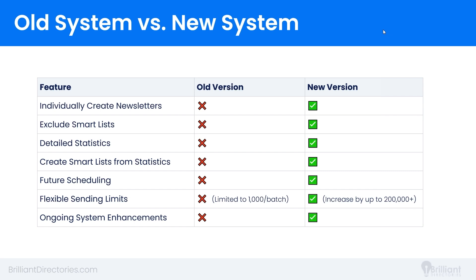Also, excluding smart lists. With the old newsletter system, you could include smart lists to send newsletters to. Now you can also choose to exclude smart lists when sending. For example, you can send a newsletter to all your members but exclude inactive members, or exclude members in a specific location, or exclude members who joined on a particular date. This gives you more flexibility in terms of your recipient lists.